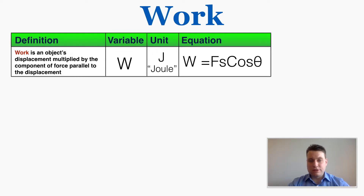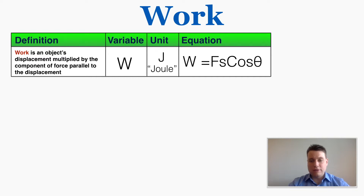The variable for work is W and the unit is J, which stands for a Joule. The equation for work is: work equals the force times the displacement s times the cosine of the angle between them.